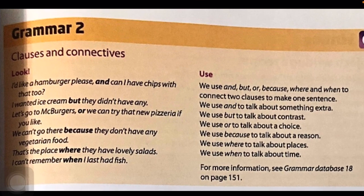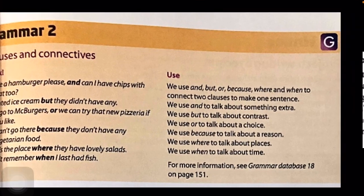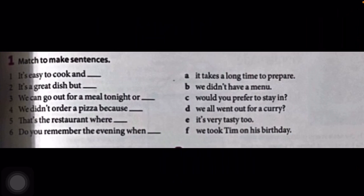Okay, if everything is clear, we must do exercises. Exercise one: match to make sentences. Яғни бұл жерде бірден алтыға дейін бір сөйлем, A-дан F-ке дейін екінші сөйлемдер берілген — екі бөлік сөйлем. Біз осы екі тармақ сөйлемді қосып бір сөйлем шығаруымыз керек. Бұл үшін and, but, or, because, where, when деген сөздерді мағынасына қарай тіркеуіміз керек.